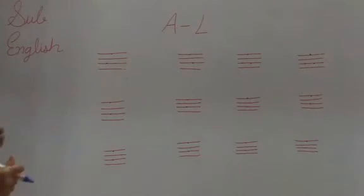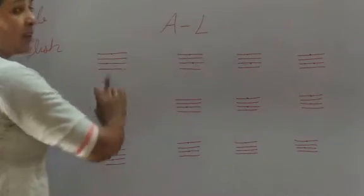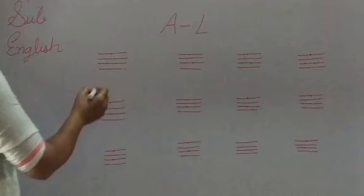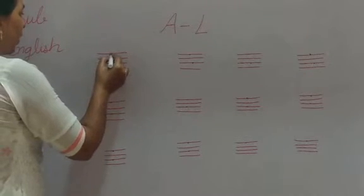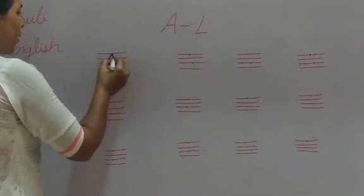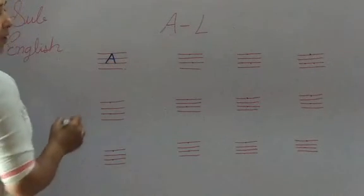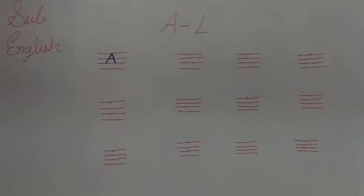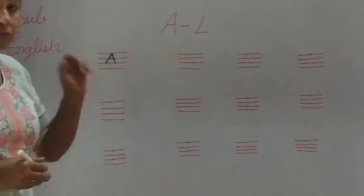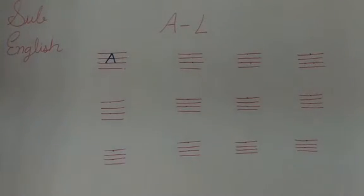Our first letter is A. A for Apple. A for so many things. A for aunt, A for airplane. So here, our first letter is A. A for Apple. Now, we speak. What comes after A?